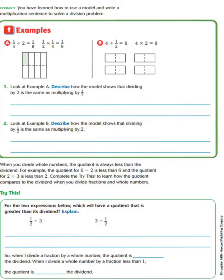Now let's look at a couple more examples, connecting back to what we just learned — using a model and writing a multiplication sentence to solve a division problem. In example 1: 1/4 divided by 2 equals 1/8, so 1/2 times 1/4 equals 1/8. Looking at this model, we divided it into 4 equal groups, then divided each group into 2, and shaded 1 piece, which equals 1/8.